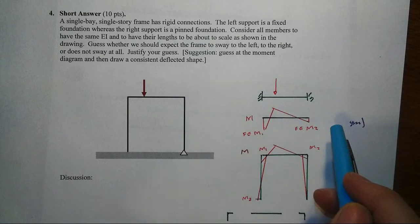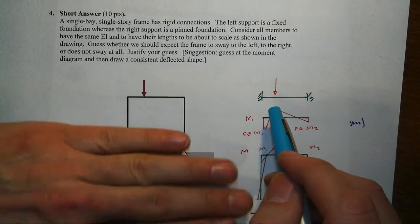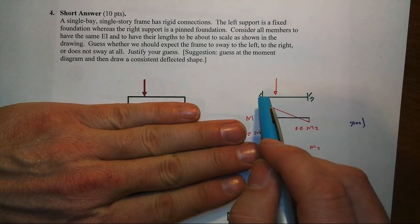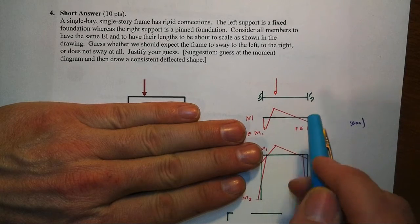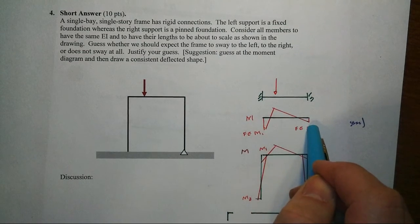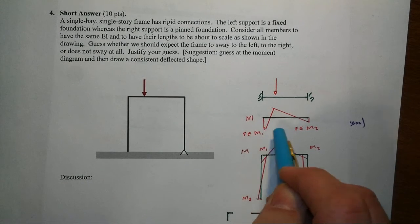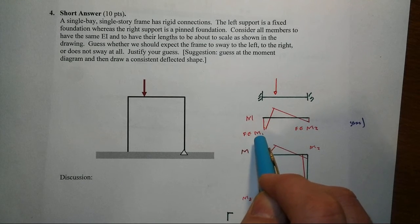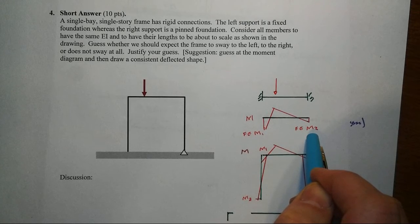So let's talk about how we might approach this. If you looked at this in isolation, the beam, let's say, was fixed-fixed. We come along and say, the moment at the left would be larger than the moment at the right. We call those the fixed-end moments. Let's call the one at the left number one, the one at the right number two.